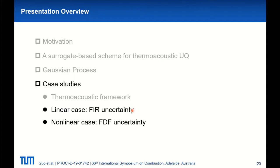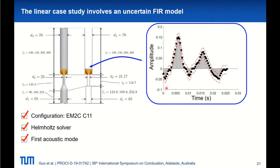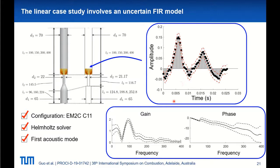Now let's put the GP models to use to address the linear case study. We consider a flame impulse response model, which describes flame dynamics in the time domain and can be converted to a flame transfer function facilitating thermoacoustic instability calculations. Our model is identified by applying a system identification method on time series of velocity fluctuation and flame heat release fluctuation. Due to combustion noise and limited time series data, the identified FIR model coefficients are uncertain, represented by confidence intervals. In total, we have 65 uncertain coefficients, which follow a multivariate normal distribution.